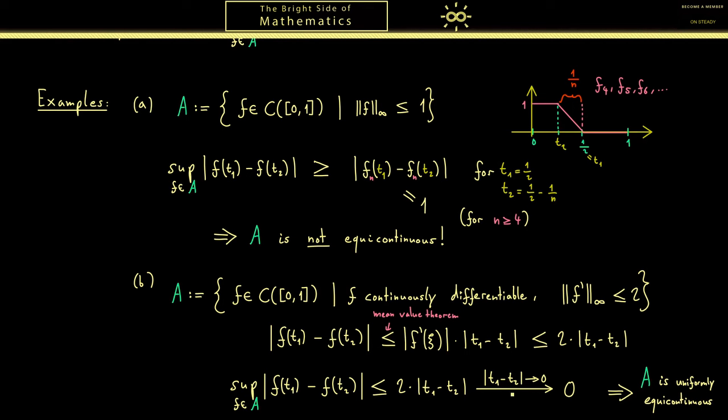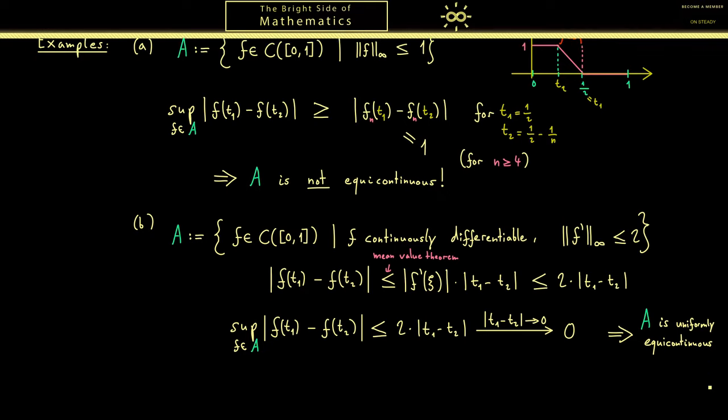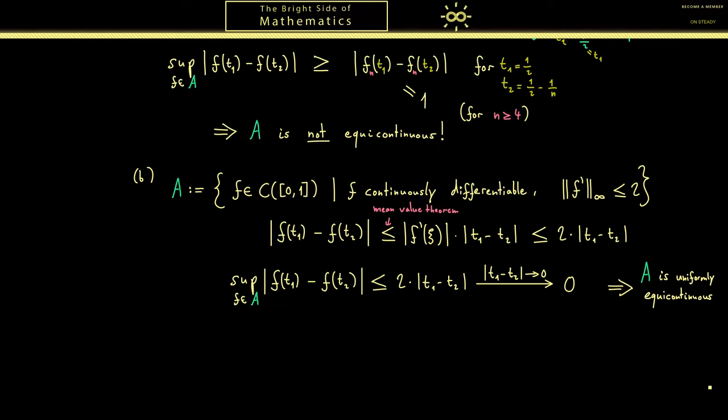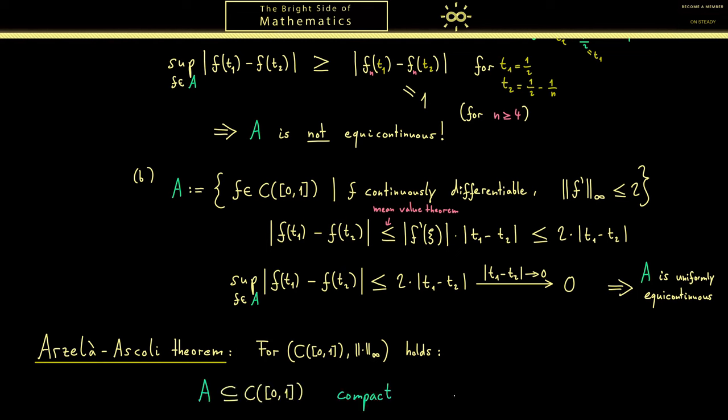Okay maybe I'll leave it with two examples for the term uniformly equicontinuous and now start with our famous Arzelà-Ascoli theorem. Finally we can state the theorem which holds in our Banach space of continuous functions. So let's take a subset A again that is compact. Now the claim is this is indeed equivalent for A being closed and bounded and uniformly equicontinuous.